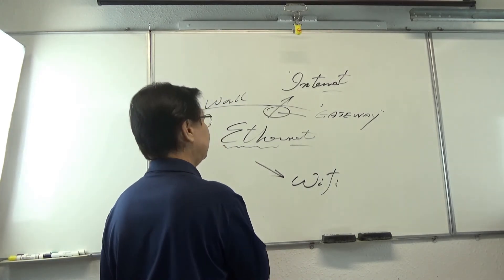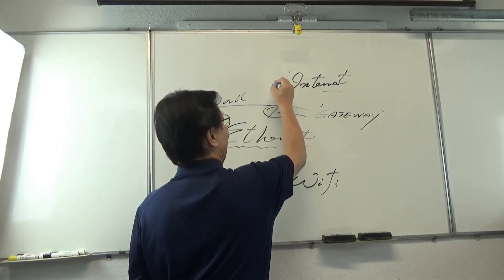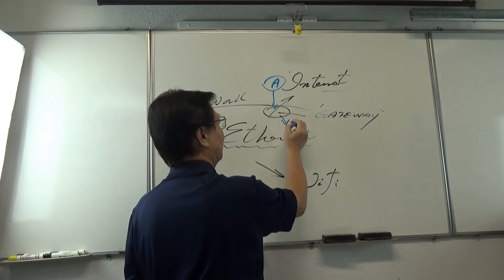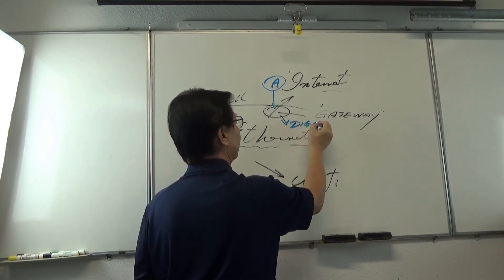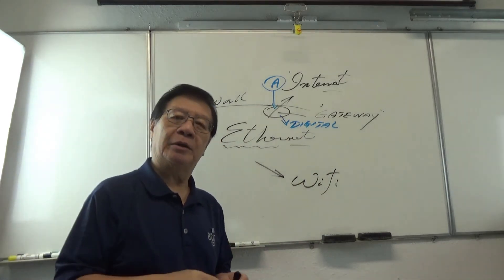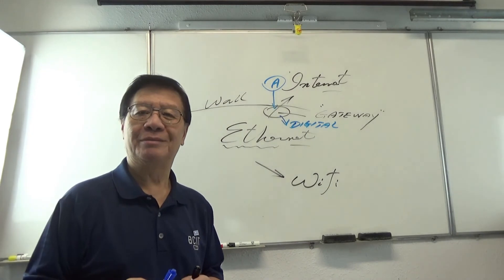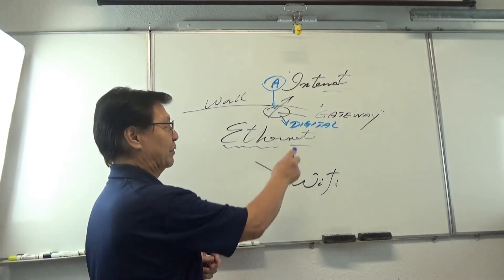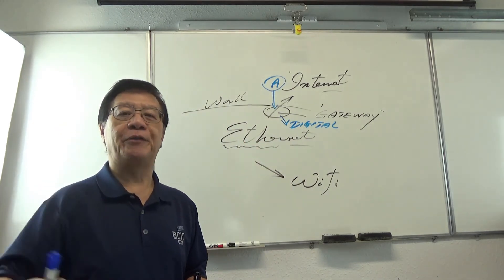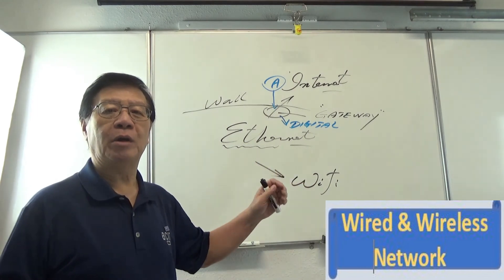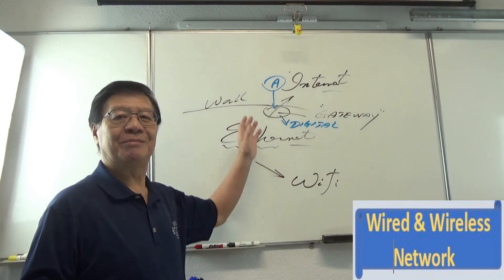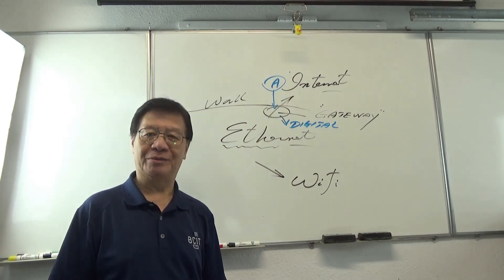So from here to here, there's an analog signal coming in and then there's a converter become the digital signal. Still remember what digital is? Digital is binary. Binary is digital. That's simple. After getting digital and then Ethernet takes the digital signal and does something further. There's an analog to digital conversion. That's a big picture of how the Internet works.